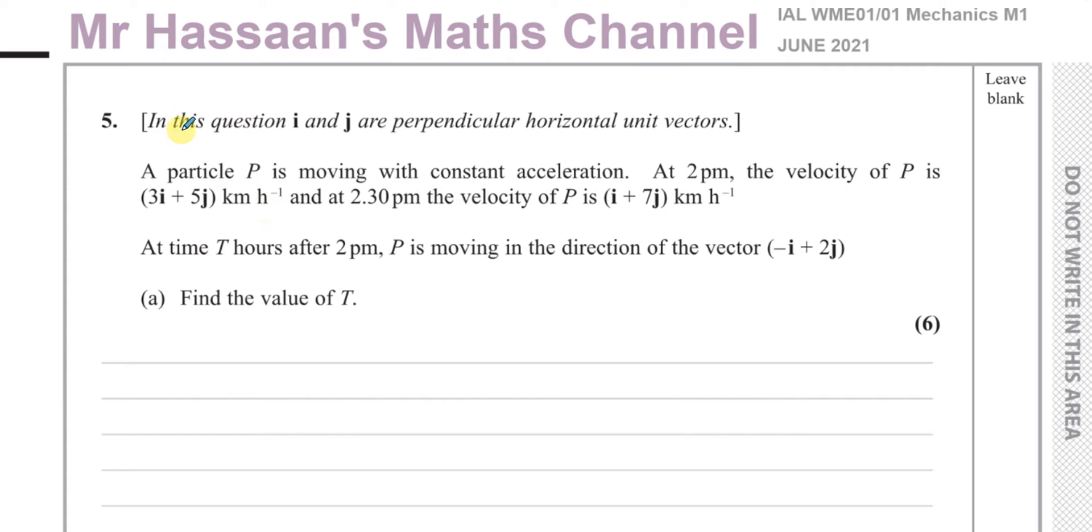In this question, i and j are perpendicular horizontal unit vectors. A particle P is moving with constant acceleration. At 2pm, the velocity of P is 3i plus 5j km per hour, and at 2:30pm, the velocity of P is i plus 7j km per hour.